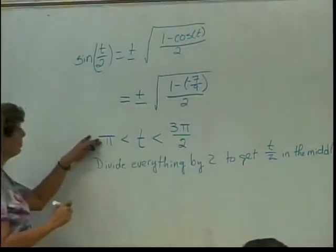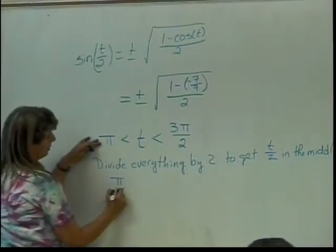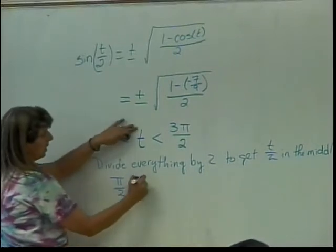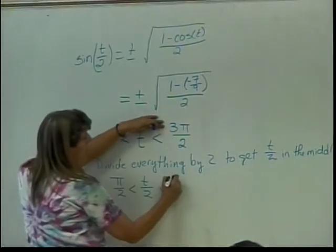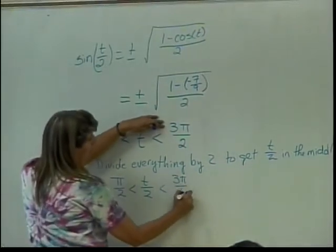So when I divide pi by 2, I get pi over 2. When I divide T by 2, I get T over 2. And when I divide 3 pi over 2 by 2, I get 3 pi over 4.